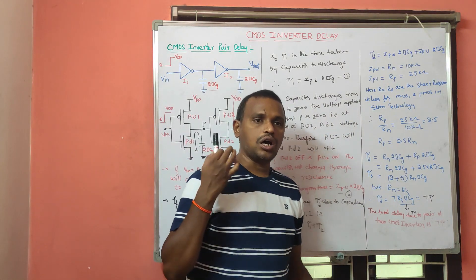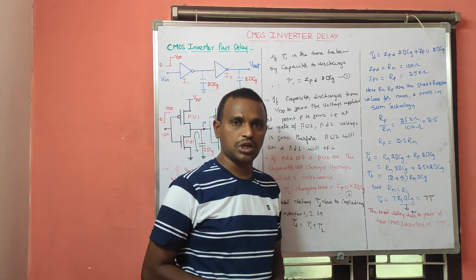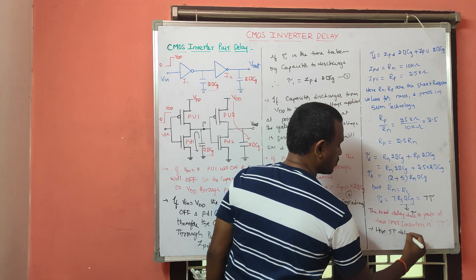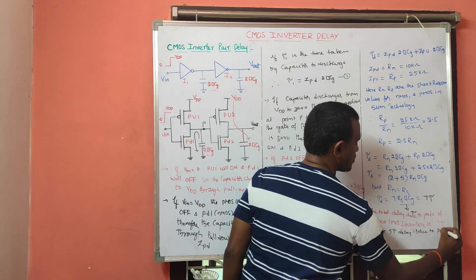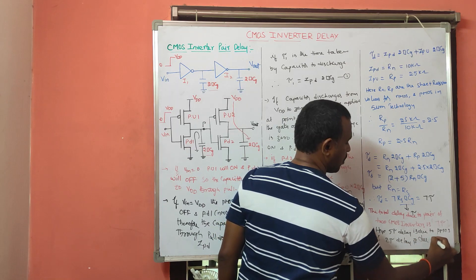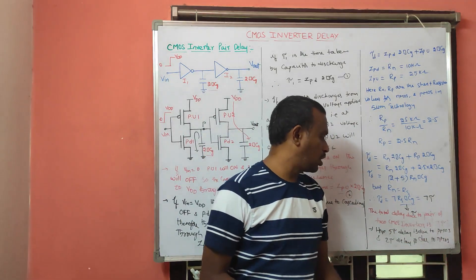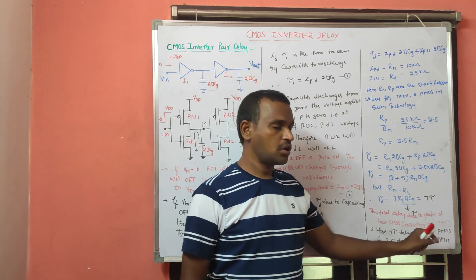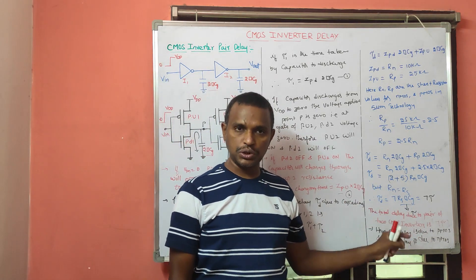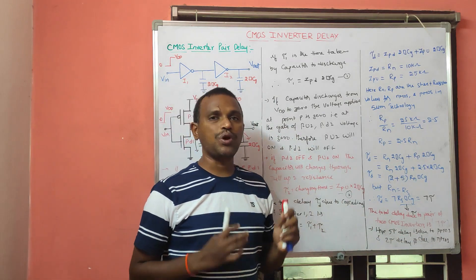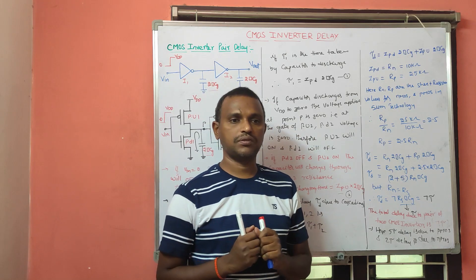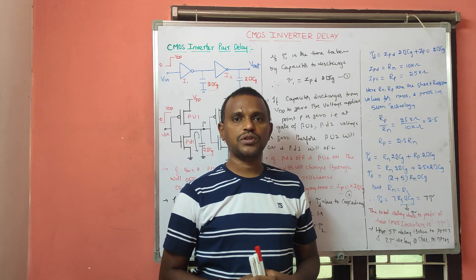Out of this 7·tau total delay, 5·tau is contributed by the PMOS and 2·tau is contributed by the NMOS. This is how we calculate the delay for a CMOS inverter cascaded with another CMOS inverter. Thank you for watching — please subscribe to our channel.